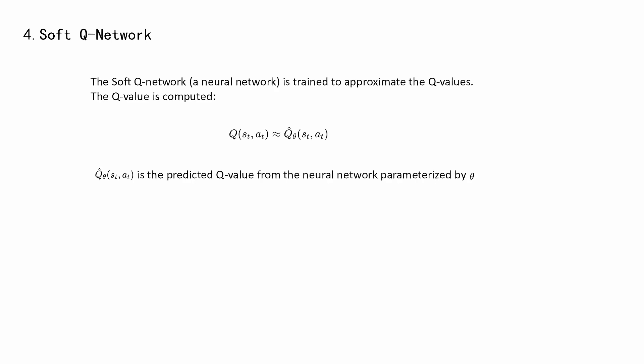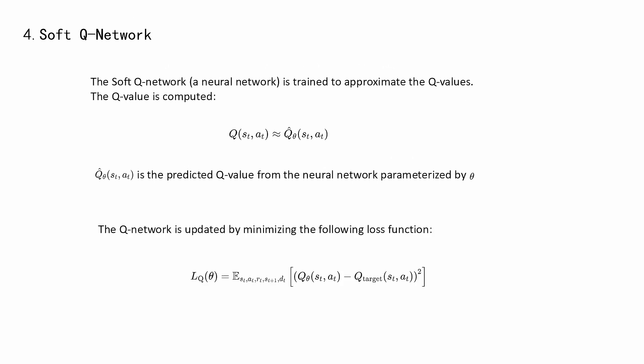Soft Q Network: The soft Q network, a neural network, is trained to approximate the Q values. The Q value is computed as follows. Q is the predicted Q value from the neural network parameterized by theta. The Q network is updated by minimizing the following loss function.